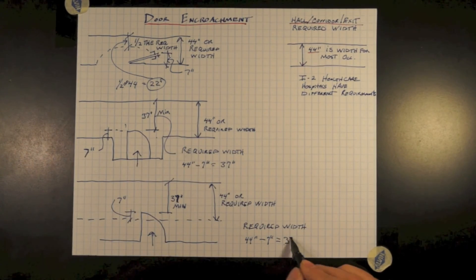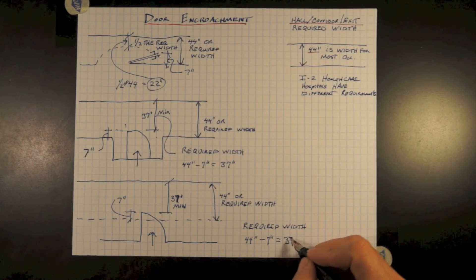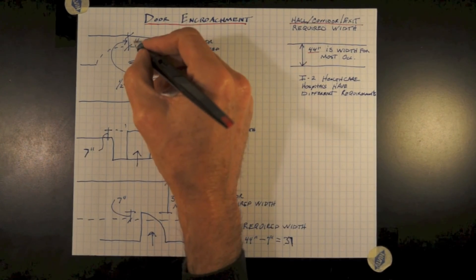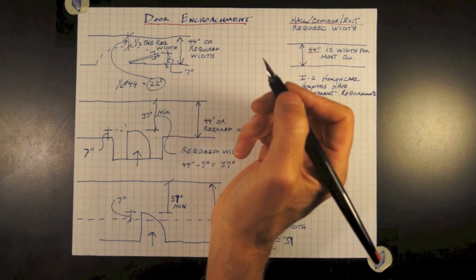The quick takeaways here is if the door swings 180 degrees into the corridor, it can swing into the corridor as long as when it's in its fully open position, it is not greater than 7 inches when it's parked. Also, it cannot narrow in its swing the required width by less than one half.